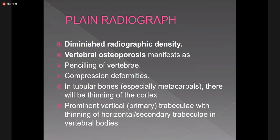On plain radiograph there will be diminished radiographic density. There is increased osteoclastic activity in osteoporosis, so there will be decreased bone density. Vertebral osteoporosis manifests as pencilling of the vertebrae, compression fractures along the superior end plate, inferior end plate, and compression fracture of the vertebral body. In tubular bones there will be thinning of the cortex.